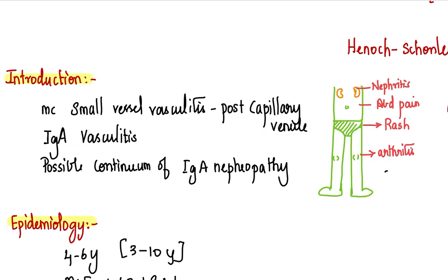It is the most common small vessel vasculitis. By small vessel, I mean it majorly involves post-capillary venules. Small vessels are pre-capillary arterioles, capillaries, and post-capillary venules. Among these three, Henoch-Schonlein purpura affects post-capillary venules. The newer terminology that is preferred is IgA vasculitis, because the immunoglobulin A deposition results in all the clinical manifestations. That is the pathogenesis behind Henoch-Schonlein purpura.